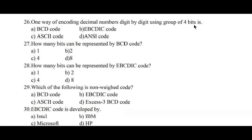Question number twenty-six: one way of encoding decimal numbers digit by digit using groups of four bits is — option A, BCD code (Binary Coded Decimal), is the right answer. Question number twenty-seven: how many bits are represented by BCD code? Option C, 4 bits, is the right answer.